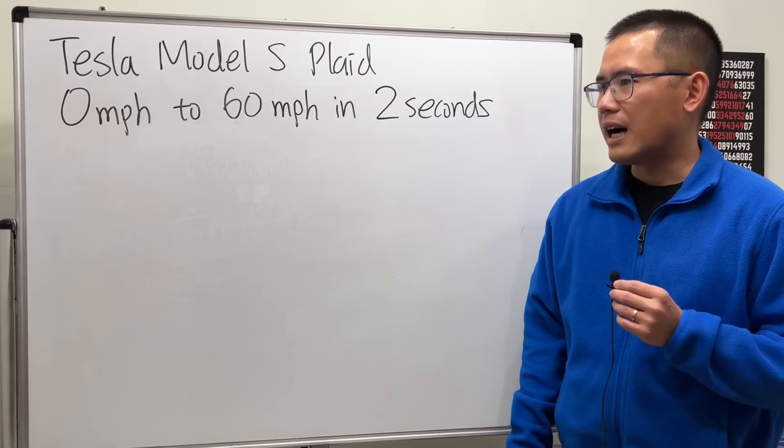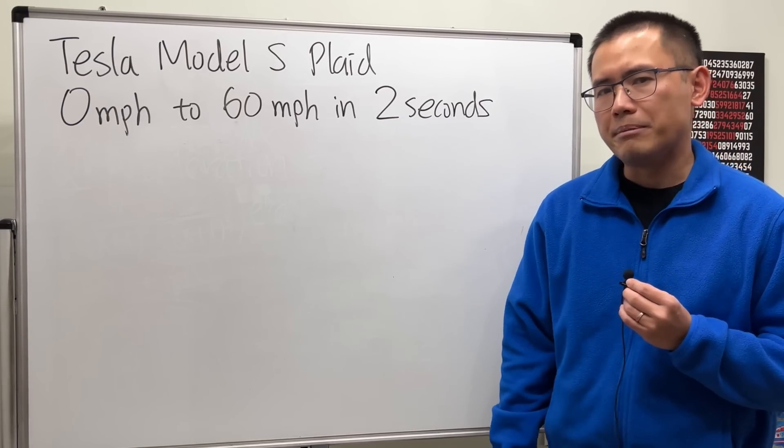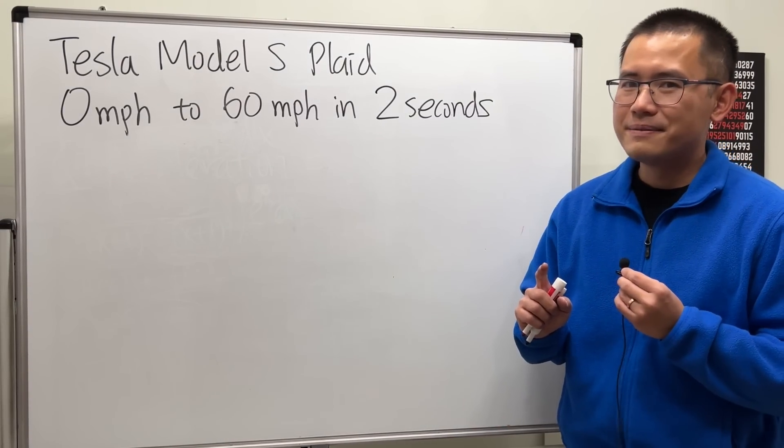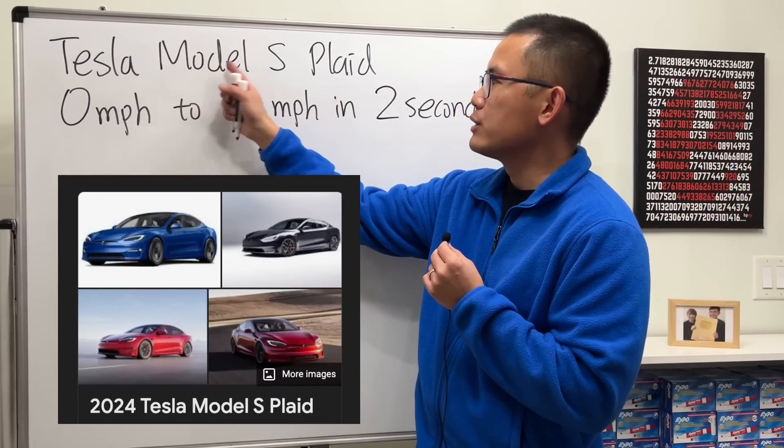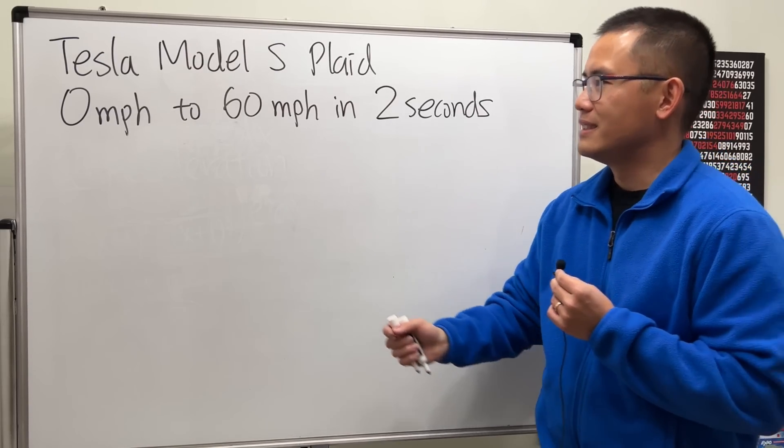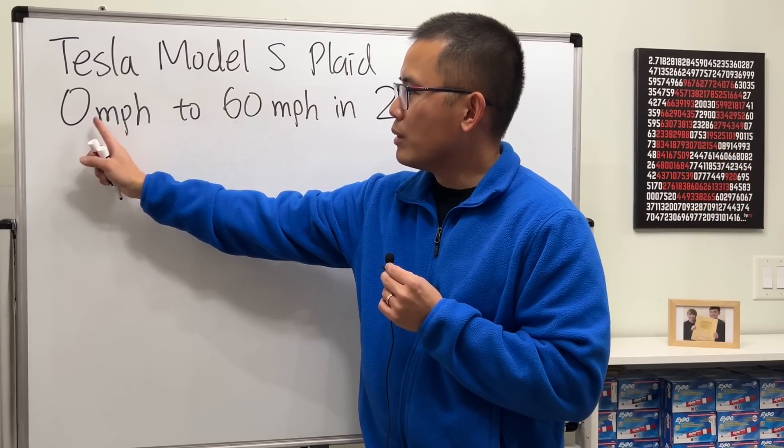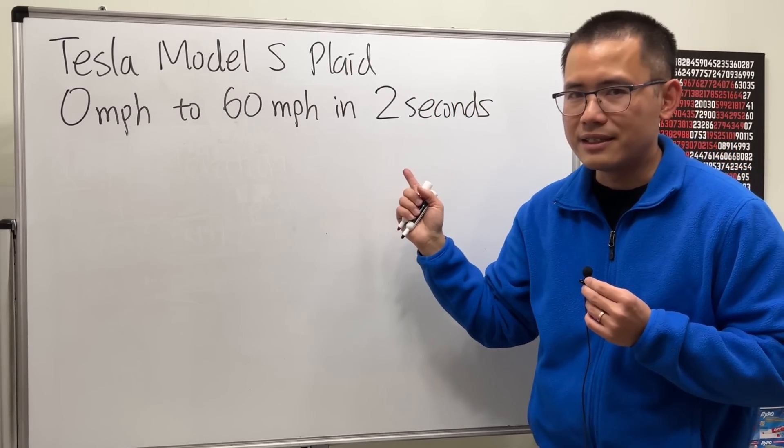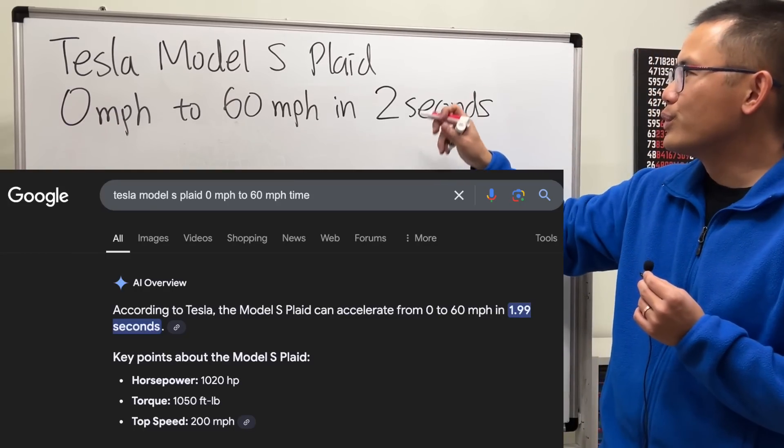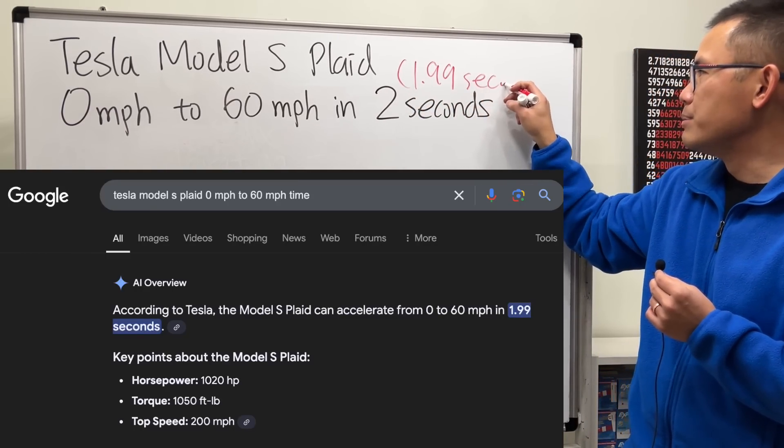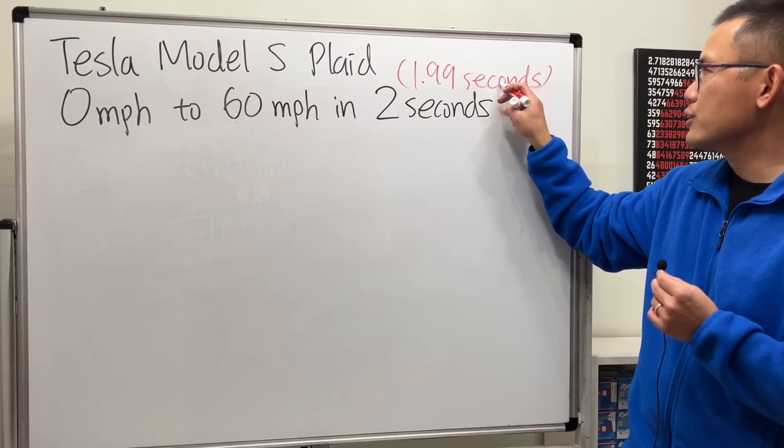Okay, this is a very interesting topic but we rarely talk about in a math class because this is more like physics. Here's a fact: if you have a Tesla Model S Plaid, this is a very fast car because you can go from zero miles per hour to 60 miles per hour in just two seconds. Technically if you Google this you will see 1.99 seconds, but for simplicity purpose I'm just going to put down two.